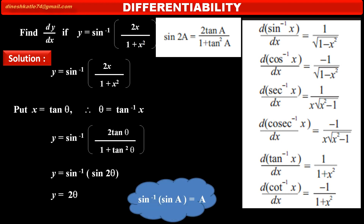So, by using the formula of inverse trigonometric function for acute angle, we can write y is equal to 2 theta. At the place of sin inverse sin 2 theta, we can write 2 theta. Therefore, substituting the value of theta as tan inverse x, we get y is equal to 2 into tan inverse x.